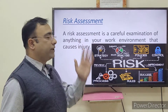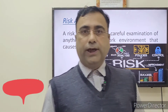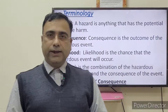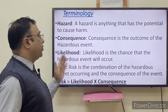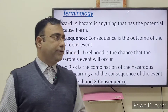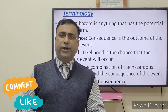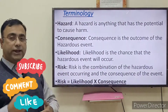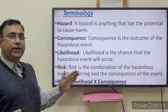The first term is risk assessment, which can be done for anything at a particular place, substance, or circumstances that have the potential to cause harm. A hazard is anything that has the potential to cause you harm. Consequence is the outcome of any hazardous event. Likelihood is simply the number of chances that an event may happen. Risk is the combination of a hazardous event's likelihood and the severity of harm.